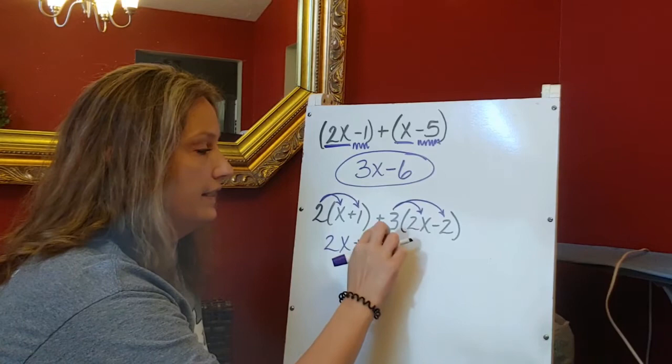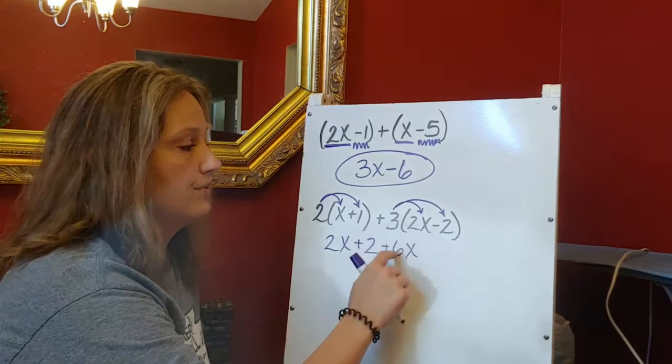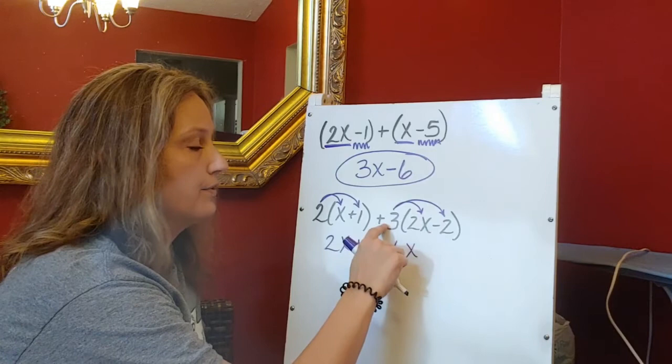My second set of parentheses, I'm going to distribute this 3. It is a positive, so positive times a positive 2x gives me plus 6x. Now remember, I'm multiplying, not adding. 3 times 2 is 6, and my x. 3 times a negative 2—3 is positive, 2 is negative, so I know my answer is going to be negative. So 3 times a negative 2 is minus 6.